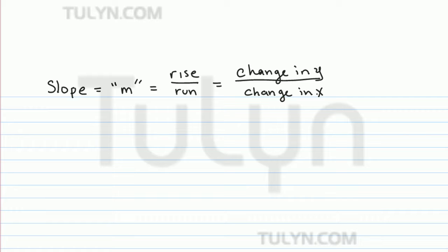An important concept to understand when we're graphing lines is the concept of slope. The slope, which is usually signified by the letter M, is the rise of a graph over the run of a graph, or you can think of it as the change in Y over the change in X.